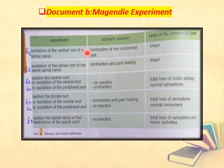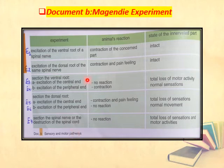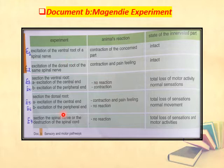Magendie's experiment was applied on dogs. He wanted to know the role of the ventral root and the dorsal root of the spinal nerve, as well as the specific role of the spinal nerve and the spinal cord. He performed experiments on dogs and was able to determine the role of each: the ventral root, the dorsal root, the spinal nerve, and the spinal cord.